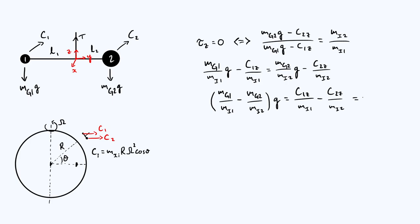So here is the key idea of the experiment, really. The conclusion is that tau z, torque about the z-axis, is equal to zero if and only if this entire bracket term is zero, because gravitational field strength is not zero, and that implies that mg1 over mi1 is equal to mg2 over mi2. In other words, the gravitational to inertial mass ratio is the same for objects 1 and 2.